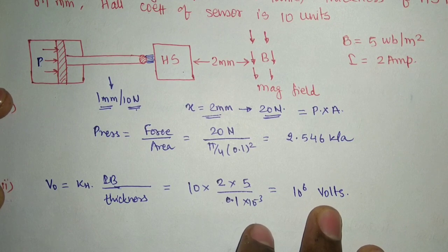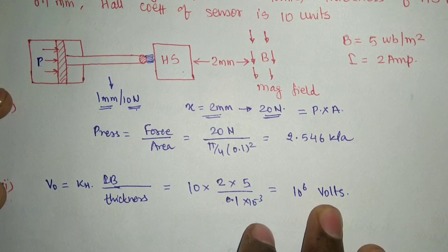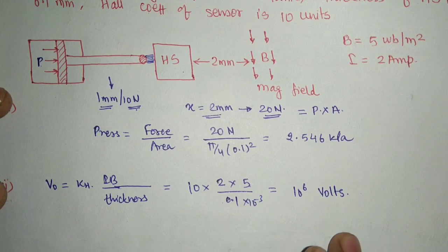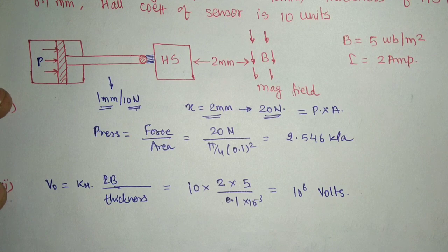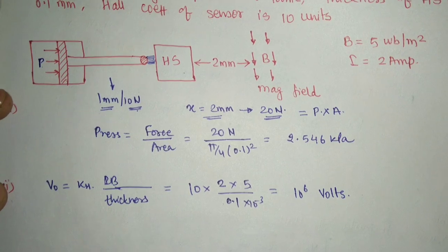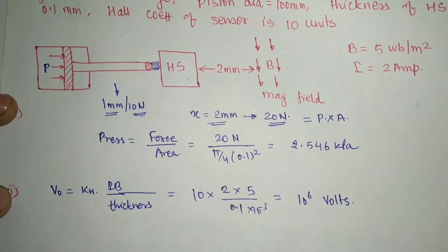Thank you for watching the video, and that is all about the Hall sensor. We have done enough practice questions and have seen the previous year questions also. It is a very simple concept. The key things to remember from the theory are Fleming's left-hand rule, the formula V0 = KH·B·I/W, the balancing of electric and magnetic forces, and the definition of the Hall constant. Thank you for watching.